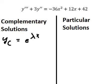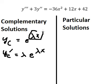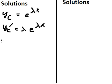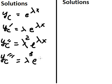First we find the derivative of yc, which is lambda e to the power of lambda x. The second derivative is lambda squared e to the power of lambda x, and the third derivative of yc is lambda cubed e to the power of lambda x.